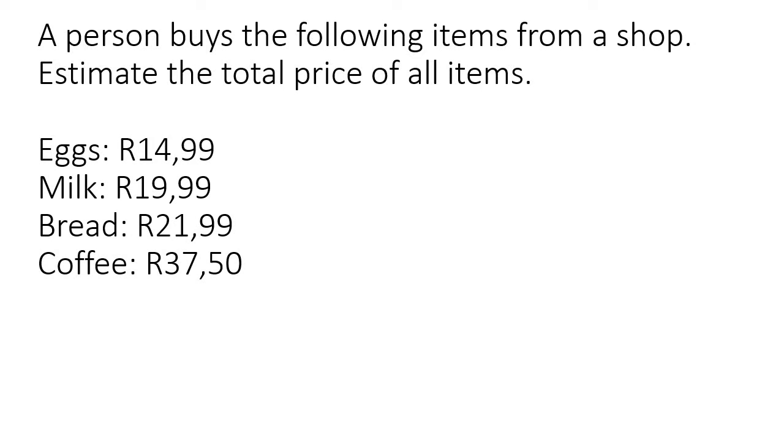For example, let's say a person buys the following items from a shop: eggs R14.99, milk R19.99, bread R21.99, and coffee R37.50. Now if you had to add that up, it's pretty difficult. But what we can rather do is just make easier numbers. Make that a 15, make that a 20, make that a 20, make that a 40. There's no exact rules with estimating. It's not the same as rounding where you always have to round up or round down. You can choose what you want.